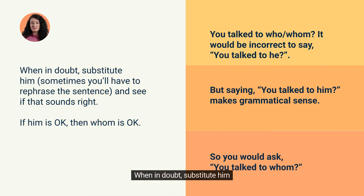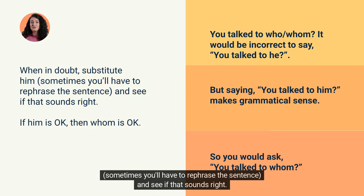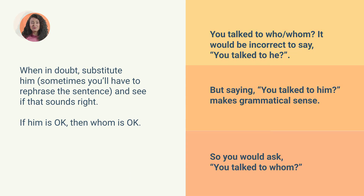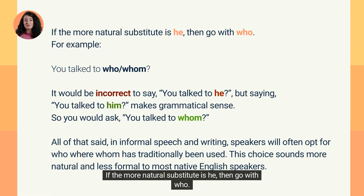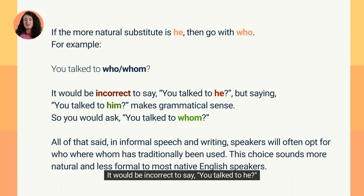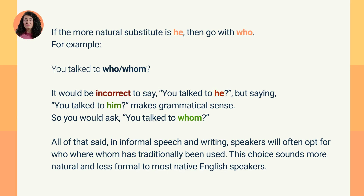When in doubt, substitute him. Sometimes you'll have to rephrase the sentence and see if that sounds right. If him is okay, then whom is okay. If the more natural substitute is he, then go with who. For example: you talk to who or whom? It would be incorrect to say you talk to he, but saying you talk to him makes grammatical sense — so you would say you talk to whom.